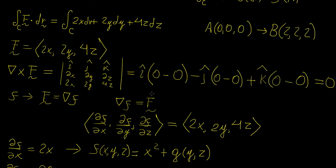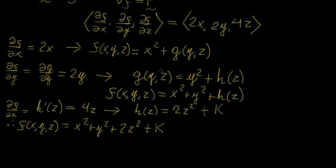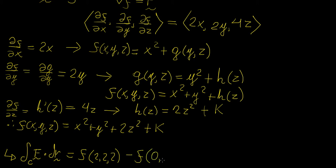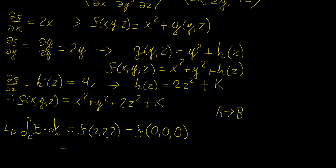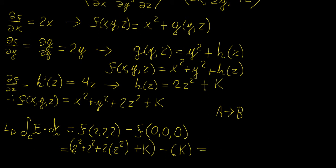Now to evaluate the line integral, we plug in the two endpoint values. The line integral equals f evaluated at (2, 2, 2) minus f evaluated at (0, 0, 0). For (2, 2, 2) we get 2² + 2² + 2(2²) + k = 4 + 4 + 8 + k = 16 + k. For (0, 0, 0) everything is zero except k. Subtracting gives 16 + k minus k, the k's cancel, so the value of the line integral is 16.